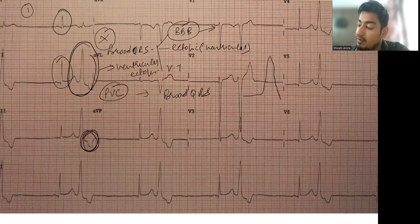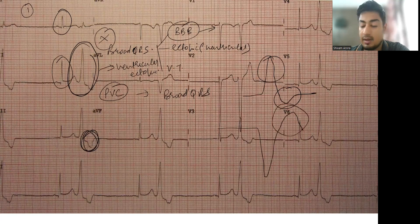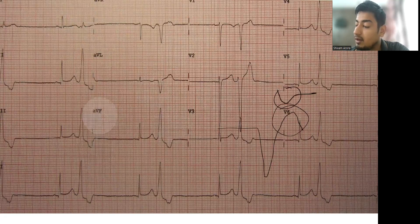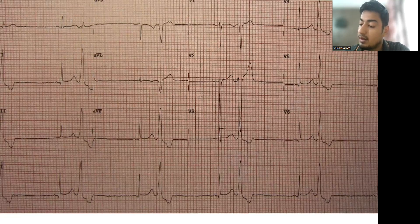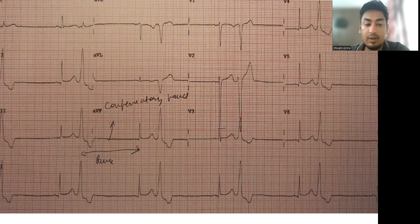Whenever there is a ventricular ectopic, the T wave will always be in the opposite direction to the QRS complex. For example, if the QRS is upright, the T wave will be inverted — this is a ventricular ectopic. After a ventricular ectopic, there is a pause, and in a ventricular ectopic, the pause is generally a compensatory pause.